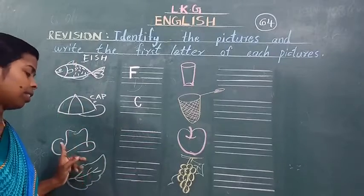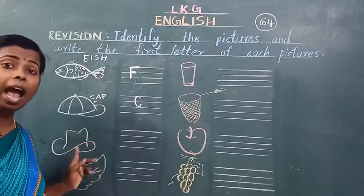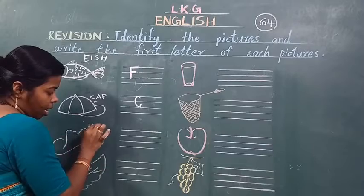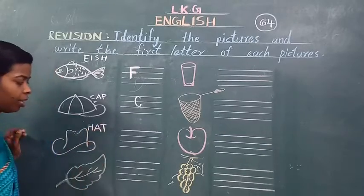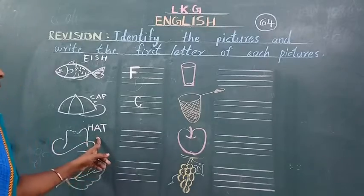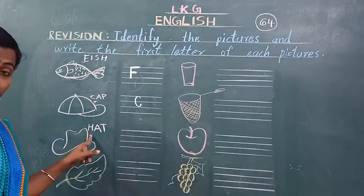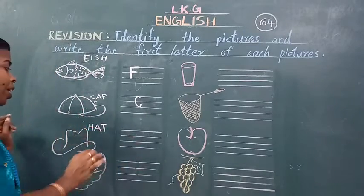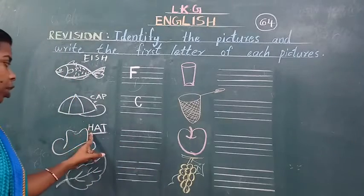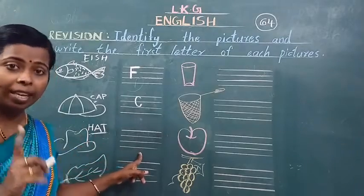What is this? This is a hat. Ye kya hai? Ye hat hai. Do you know the spelling of hat? H-A-T hat. Spell the word hat — H-A-T hat. Idhar koon sa letter likhena hai? H likhena hai. Kyoonki ye hat ki spelling hai — H-A-T hat. Ismei pahla letter H hai. Isse liye haam idhar H likhenge.